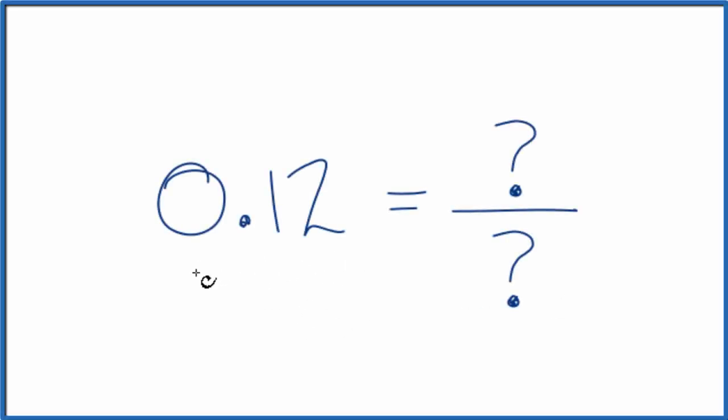We want to express the decimal 0.12 as a fraction, a numerator over a denominator. A good way to think about 0.12 is we could say it's 0.12 over 1. We're just dividing by 1, so we haven't changed anything. But now we have the start of our fraction.